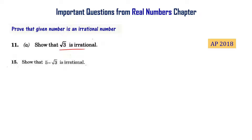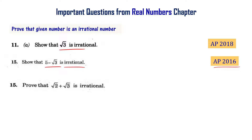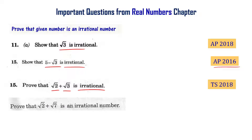Show that 5 minus root 3 is an irrational number — that is AP final exam 2016. Prove that root 2 plus root 3 is irrational — that is Telangana final exam 2018. Prove that root 2 plus root 7 is an irrational number — that is Telangana final exam 2019.